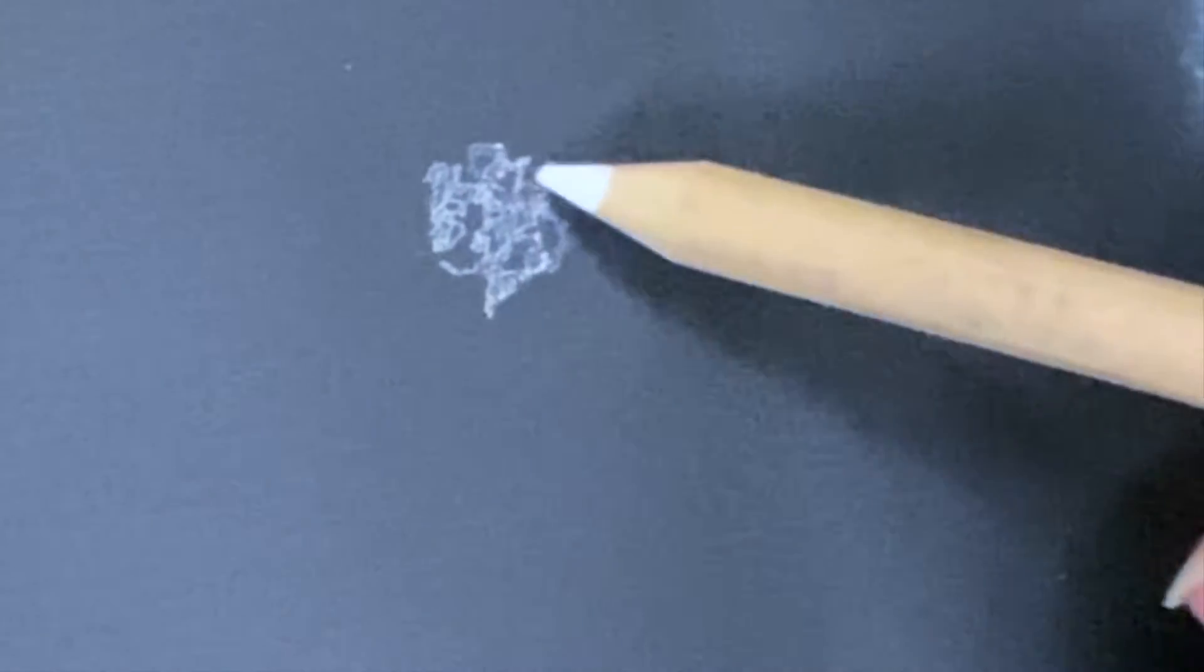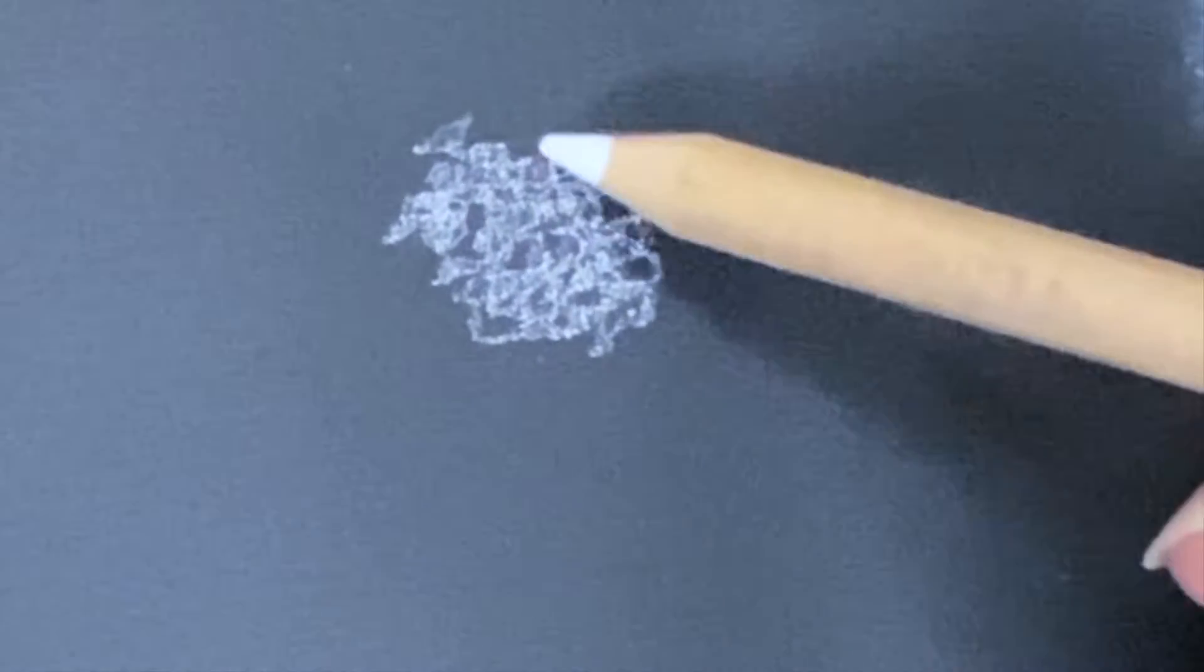See all these skin defects, all these wrinkles, all this stuff? This is what you're trying to recreate. The beauty of drawing skin is you get to draw all those wrinkles, zits, moles, and freckles that you don't like. I recreated this skin texture by going in with my white charcoal pencil in a circular pattern.